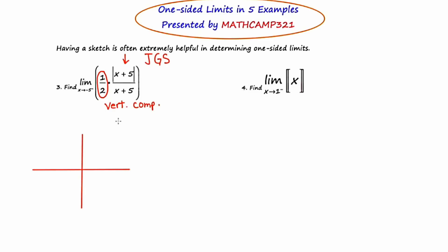Now let's talk about where this step is going to be. The one half placed in front of any function gives us either a vertical stretch or a compression, depending on whether it's bigger than one or between zero and one. Because one half is a value between zero and one, we know it's going to be a vertical compression. Typically the step is one up and one down, but now it's only going to be a half up and a half down.